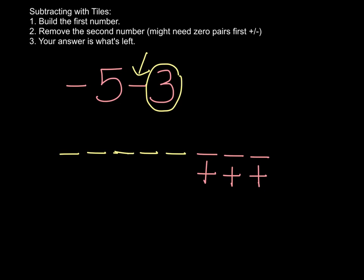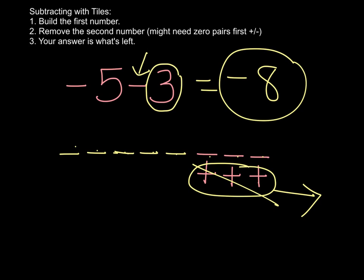All right, so then we're going to be taking away 3, and now I have 3 positives to remove. And then when I count up what's left, I see that it's just 1, 2, 3, 4, 5, 6, 7, 8, and those are all negatives. So negative 5 minus 3 is negative 8.